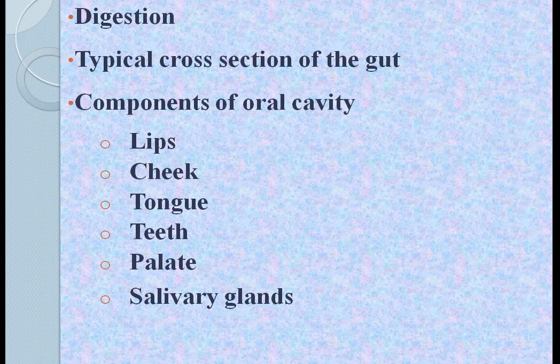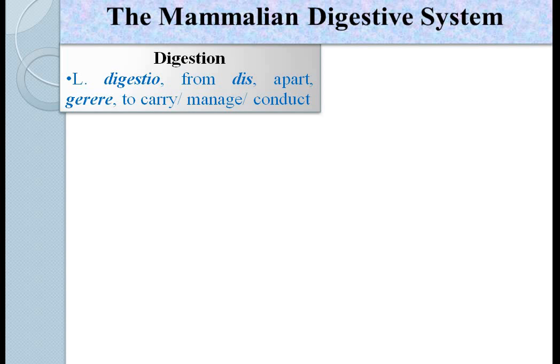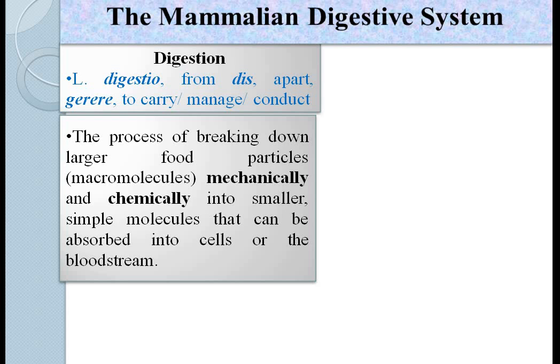Starting with the mammalian digestive system, let's define digestion first. The word digestion is derived from a Latin word 'digestio', which is a combination of two words: 'dis', meaning apart, and 'gerere', meaning to carry, manage or conduct. So, the process of breaking down larger food particles, i.e. macromolecules, mechanically and chemically into smaller simple molecules that can be absorbed into the cells or bloodstream is called digestion.